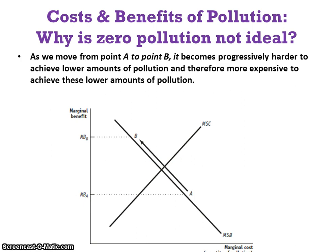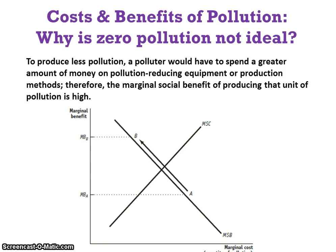The optimal amount of pollution is when marginal social cost of another unit equals the marginal social benefit of cleaning that unit up. As we move from point A to point B up the marginal social benefit curve towards less pollution, it becomes progressively harder and more expensive to achieve lower amounts of pollution, because the marginal social benefit is higher than the marginal social cost. So it's very costly to clean up this pollution, and we only do so to the point where benefits equal the cost of another unit of pollution cleanup.